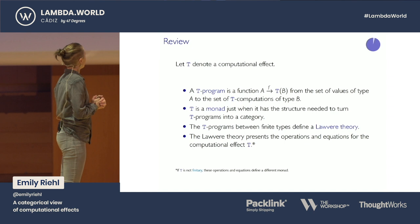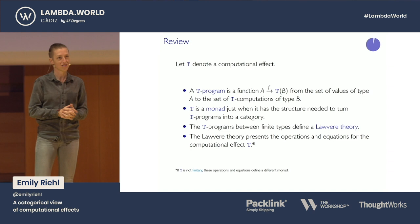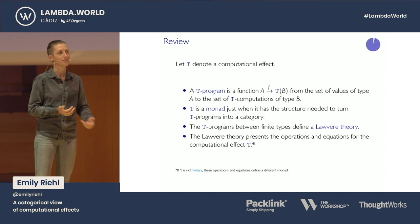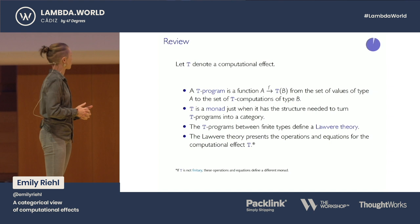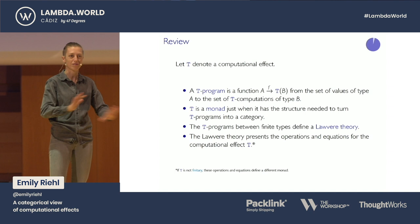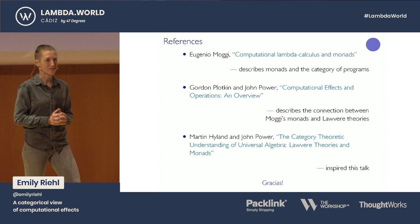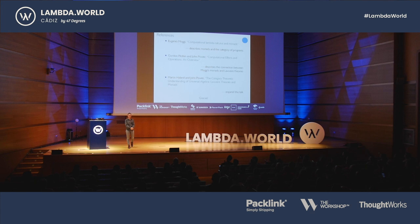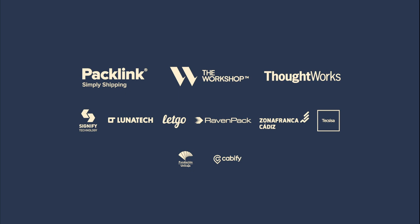To summarize: a T program is a function from A to T computations of elements of B. A computational effect is a monad just when these T programs can be composed — when they admit the structure of a category. T programs between finite types also define a Lawvere theory, presenting the operations and equations for the computational effect. Provided the computational effect is finitary — so not continuations — this recovers the full structure of the monad. I hope this talk is a teaser that encourages many of you to learn more about it. Here are some references. Thank you very much.